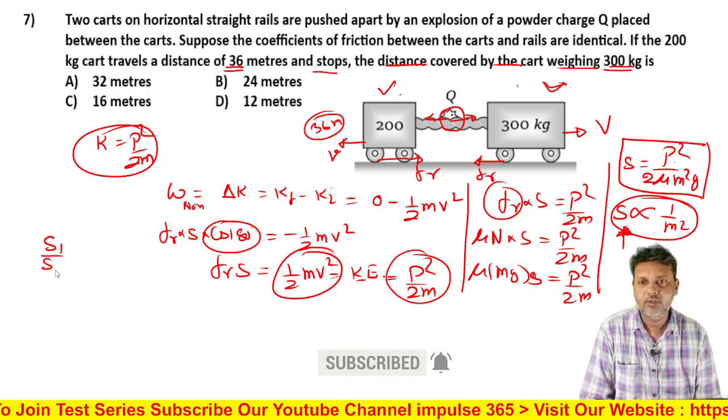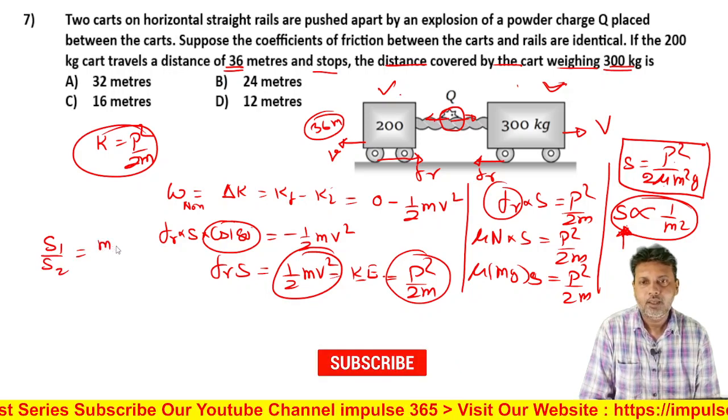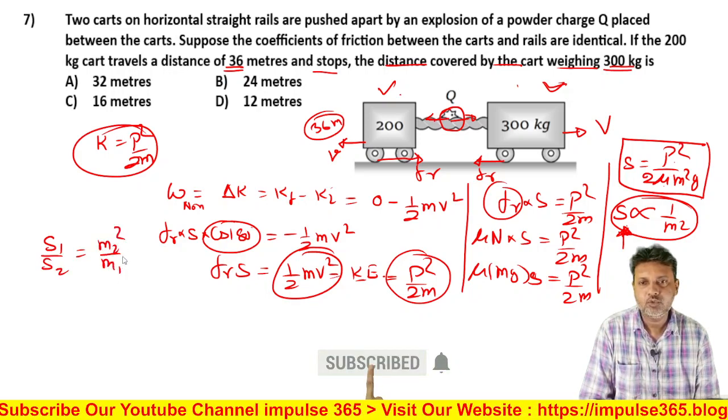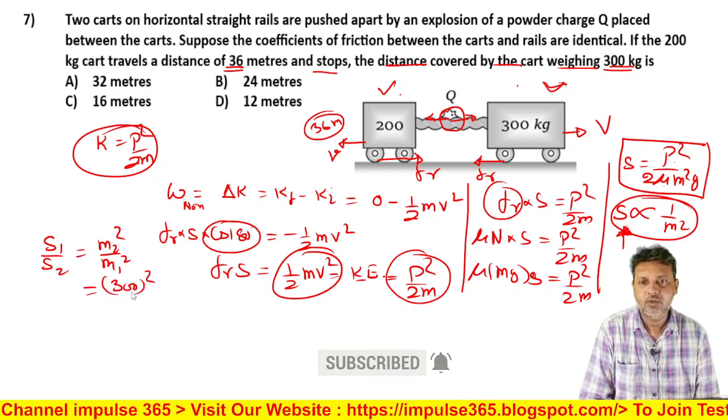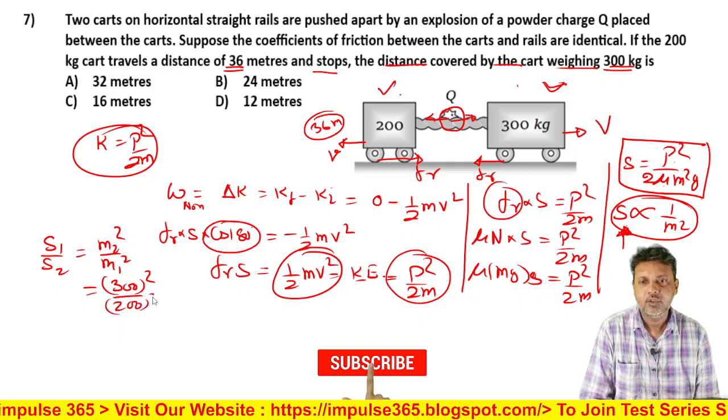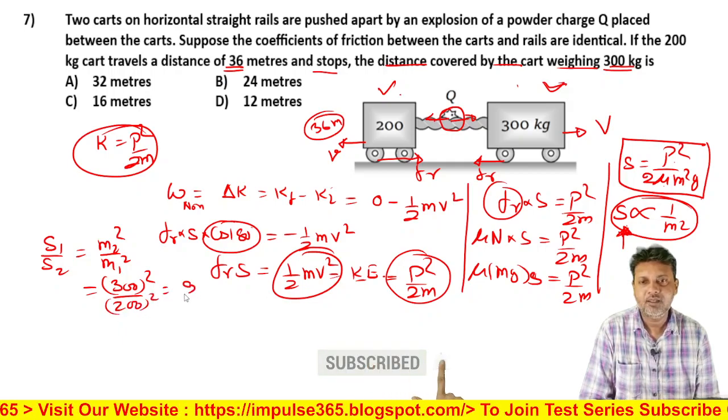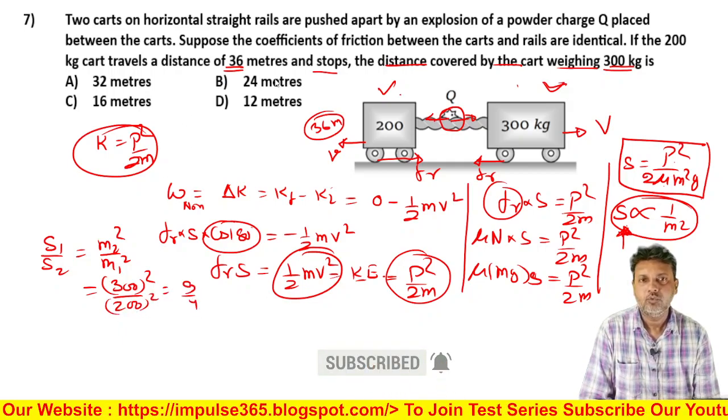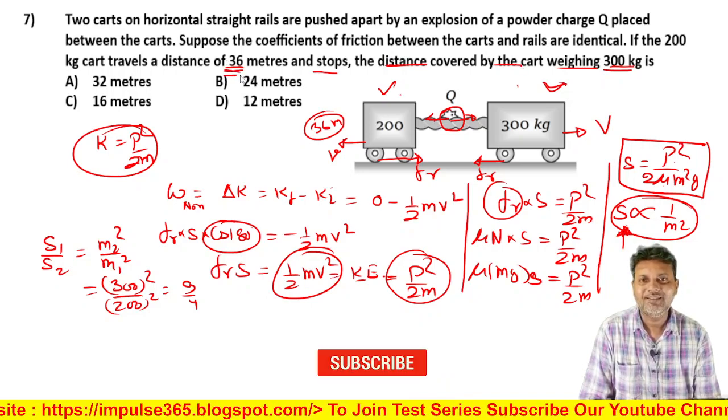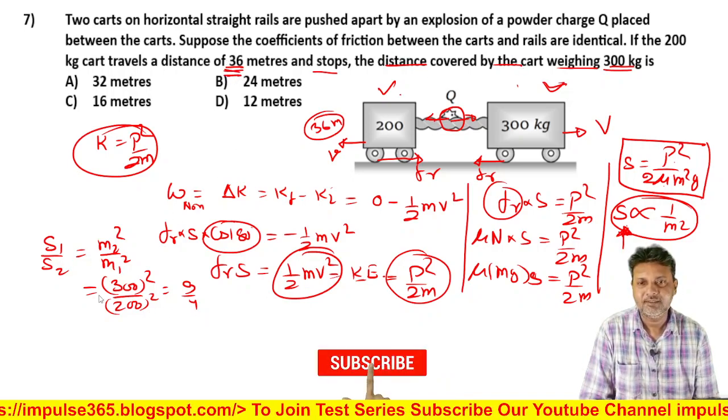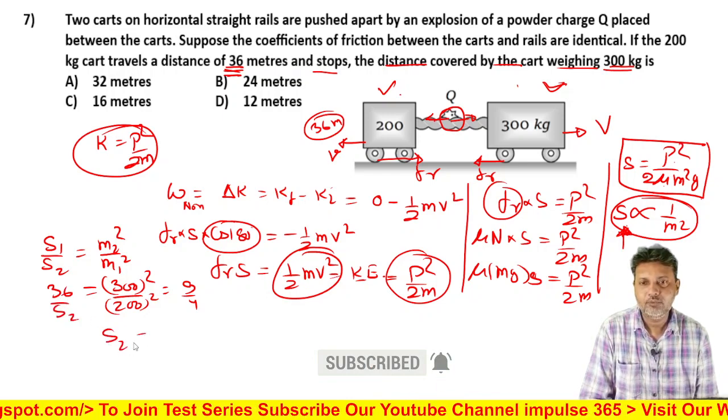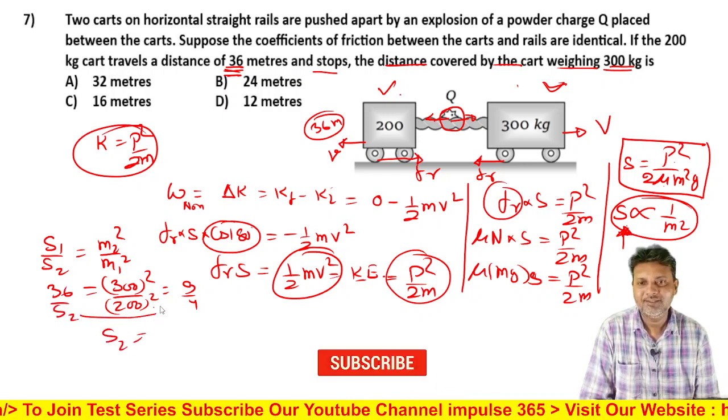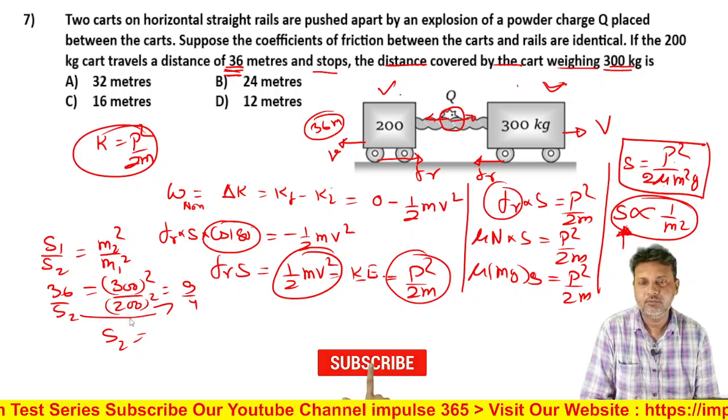S1 upon S2 is equal to m2 squared upon m1 squared. That's 300 squared divided by 200 squared, which equals 9 by 4.